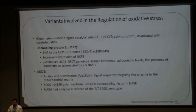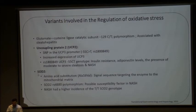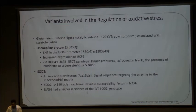Variants involved in regulation of oxidative stress include GCLC (glutamate-cysteine ligase catalytic subunit), with the 129C/T polymorphism associated with steatohepatitis. Uncoupling protein 2 is localized to the mitochondria, and the SNP in the UCP2 promoter has been shown to predispose to insulin resistance, decreased adiponectin levels, and presence of moderate to severe steatosis and NASH. Superoxide dismutase 2 (SOD2) amino acid substitution polymorphism has increased susceptibility to NASH, with higher incidence in patients with the TT allele of this SOD2 genotype.